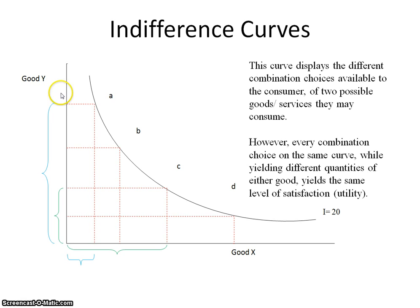In the indifference curve analysis, the Y-axis represents the quantity of units of good Y that can be chosen by the consumer, and on the X-axis we have good X, the quantity of units of good X that could be chosen by the consumer. We see here that you have different combination choices represented by A, B, C, and D.